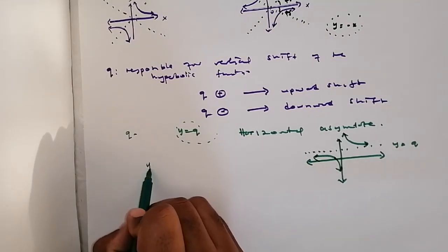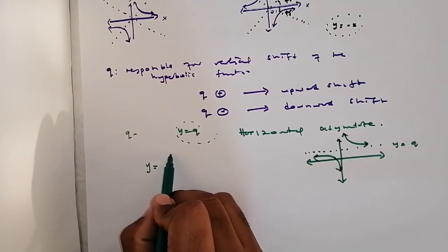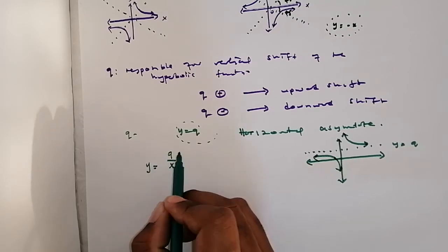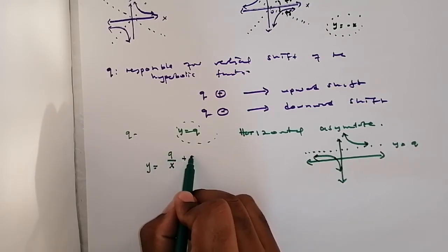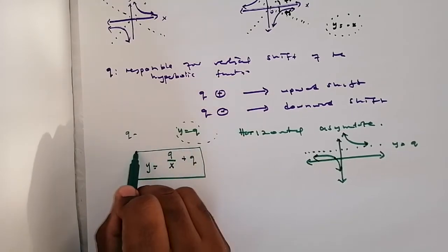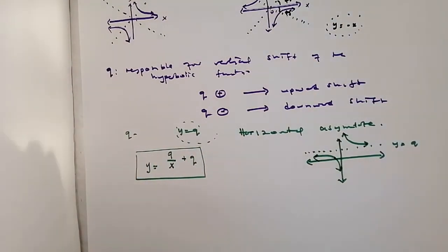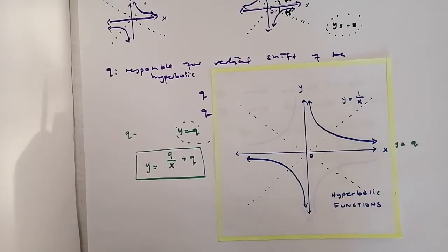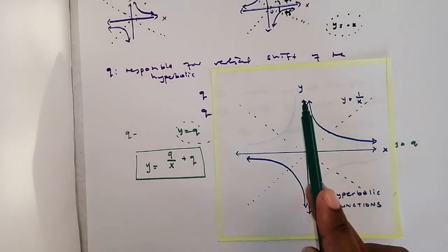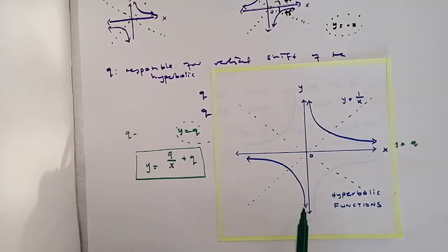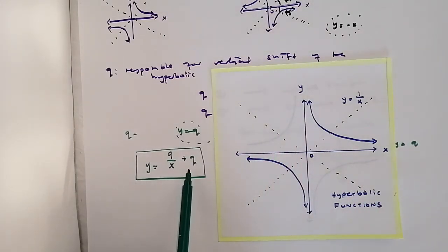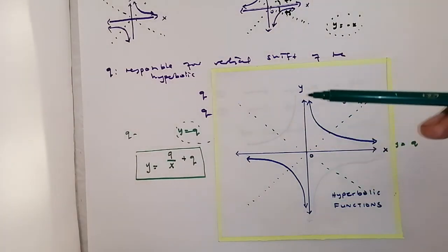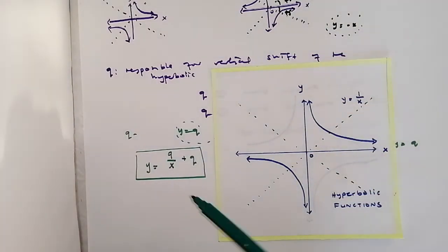Let's say we've got a function y equals a divided by x plus q. Depending on what the value of a is, if the value of a is positive, the wings of the hyperbola will be here and here. If it is negative, the wings will be here or here. And Q is responsible. If Q is, let's say, positive, the graph will go like 1, 2, 3, 4, up until Q times. If it is negative, the graph will go down.